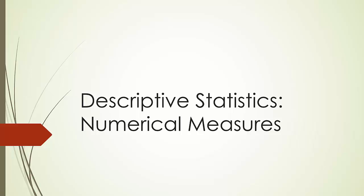In this chapter, we will quickly review some key numerical measures of data, another essential part of descriptive statistics. The numerical measures introduced in this chapter include location, dispersion, shape, and association.